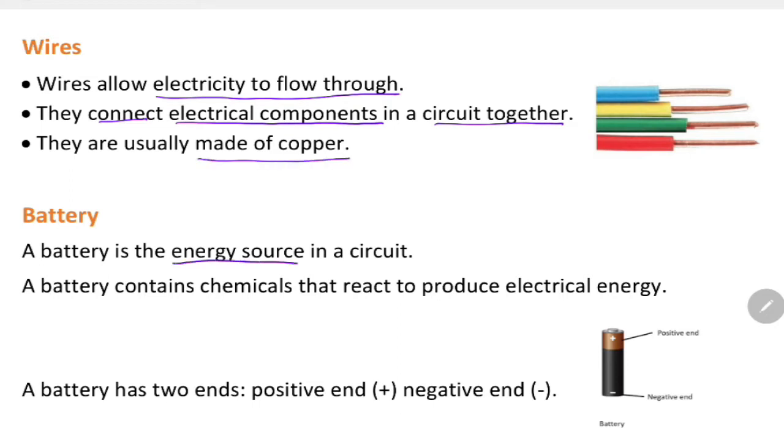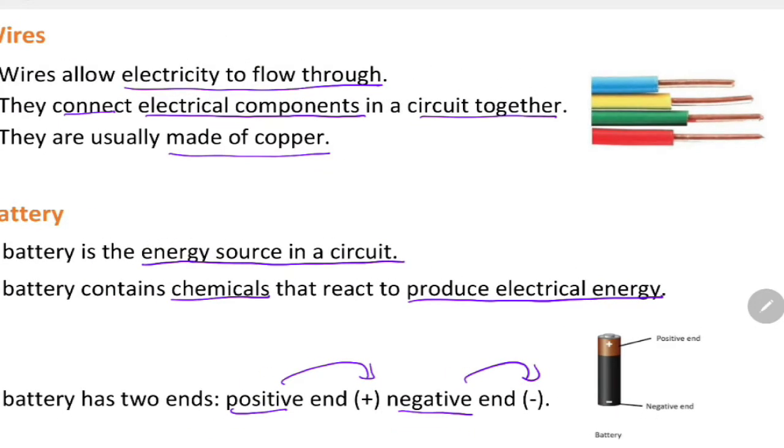A battery is the energy source in the circuit. A battery contains chemicals that react to produce electrical energy. A battery has two ends: positive end (+) and negative end (-). If you look at this picture here, the battery, you see a positive end has a cap on it, while a negative end doesn't have a cap.